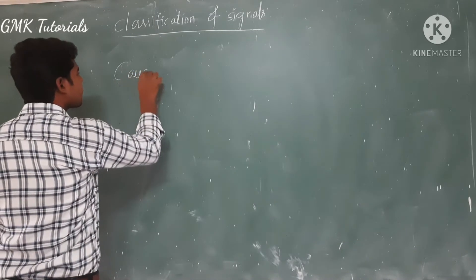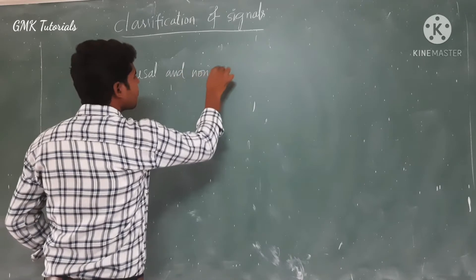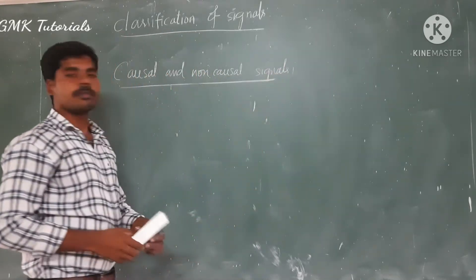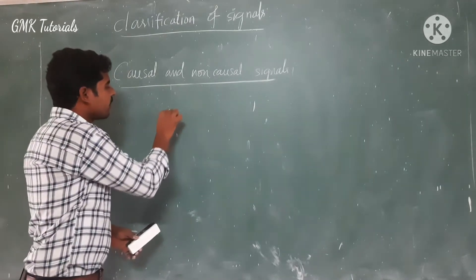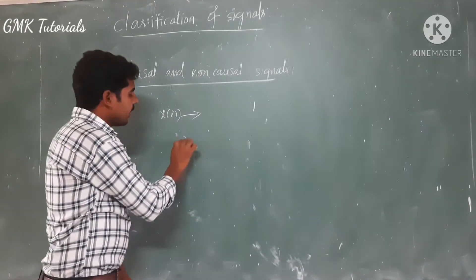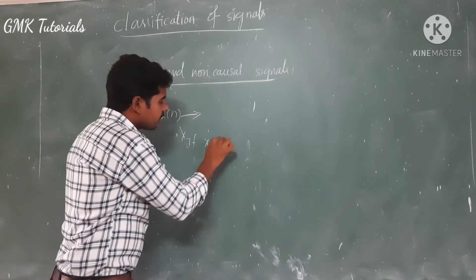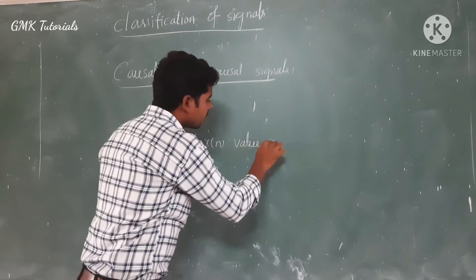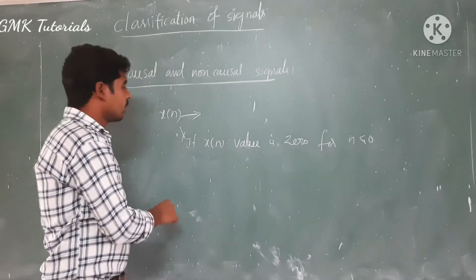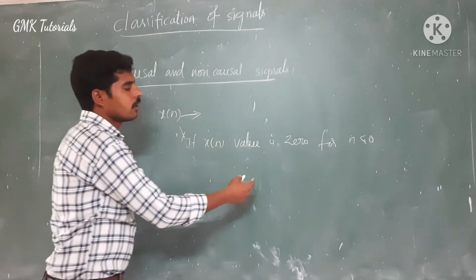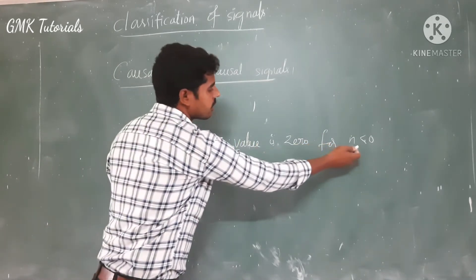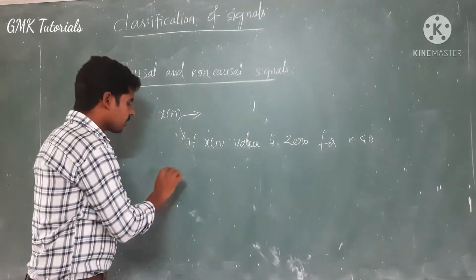So this is nothing but causal and non-causal signals. Suppose x of n is a discrete time signal. The signal x of n is a causal signal if its value — x of n — is equal to 0 for n less than 0. Otherwise it is a non-causal signal.